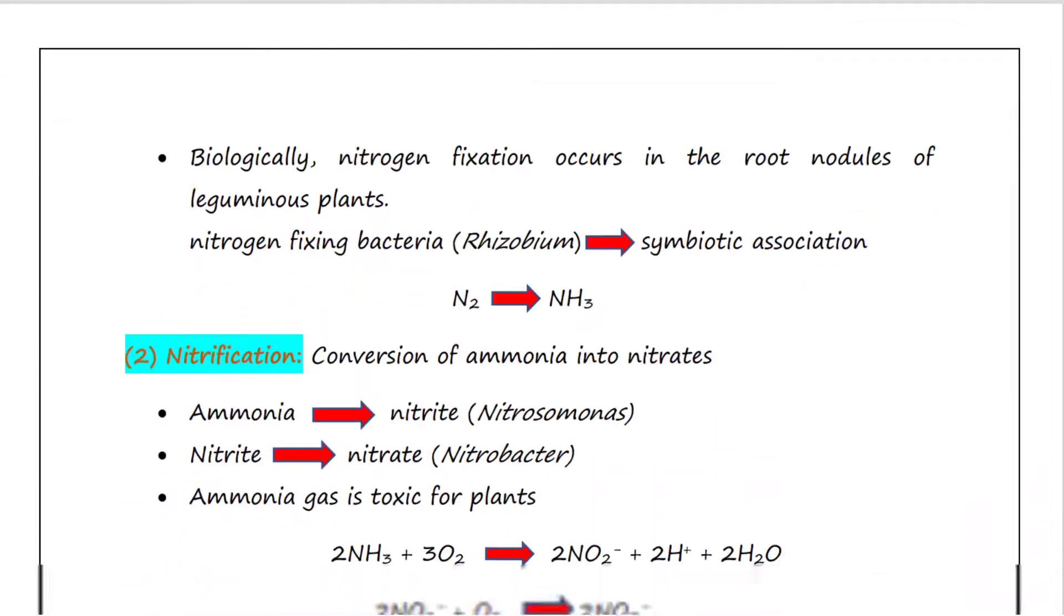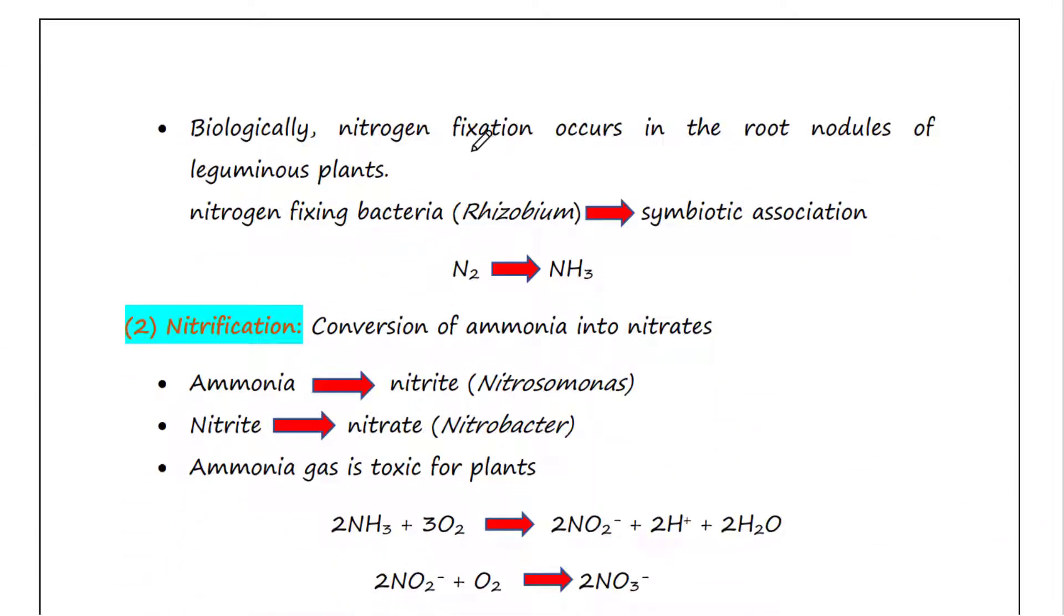In nature, lightning and ultraviolet radiation provide enough energy to convert nitrogen to ammonia. Industrial combustion, automobile exhausts, and power generating stations are also sources of atmospheric ammonia. Biologically, nitrogen fixation occurs in the root nodules of leguminous plants. Nitrogen fixing bacteria such as Rhizobium occur in symbiotic association. Such bacteria are called nitrogen fixers, and the enzyme is called nitrogenase.